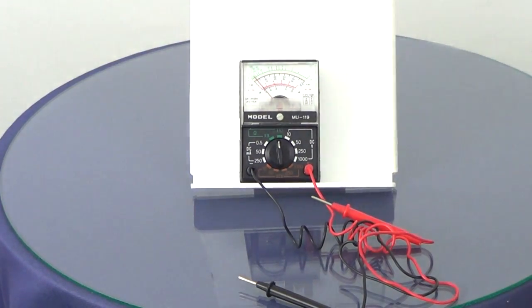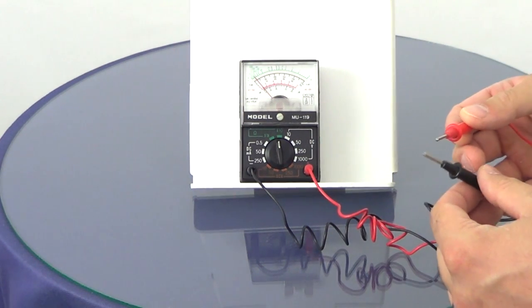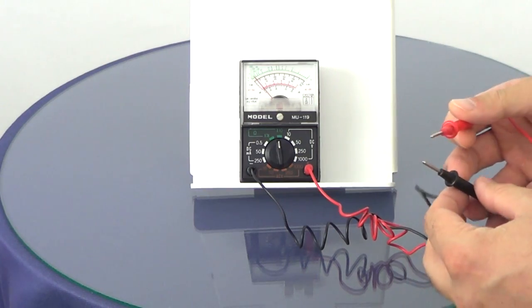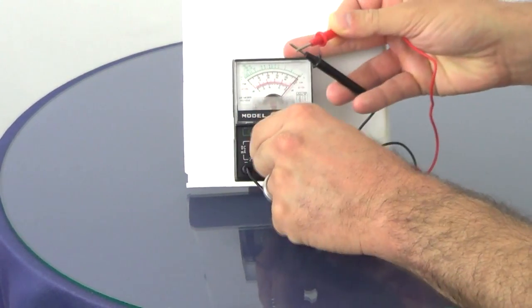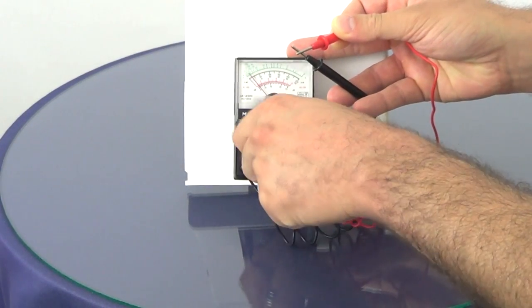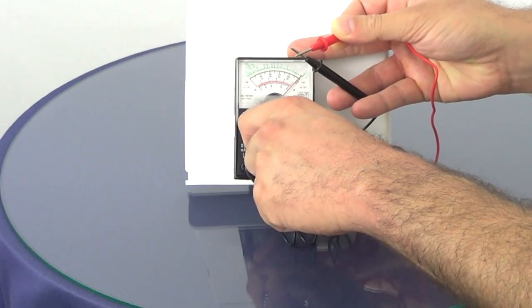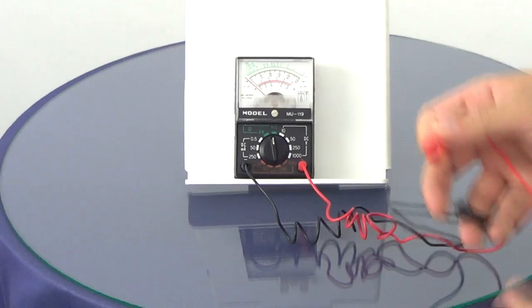An easy way to find where you should set it on that dial is just to touch these together and turn this until the meter jumps to the right like that and you know you're in the right place.